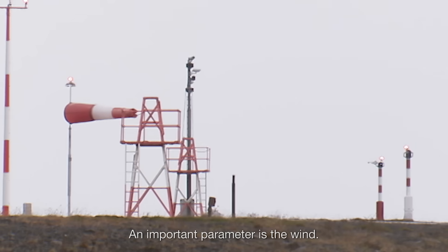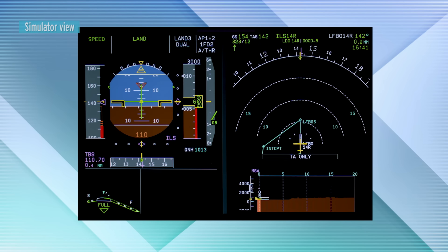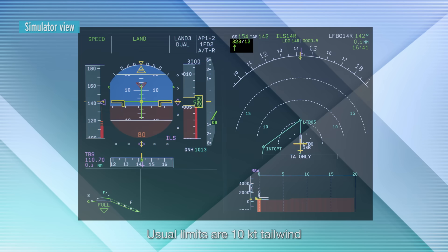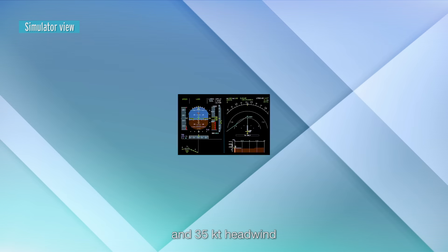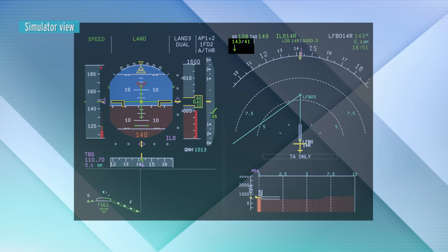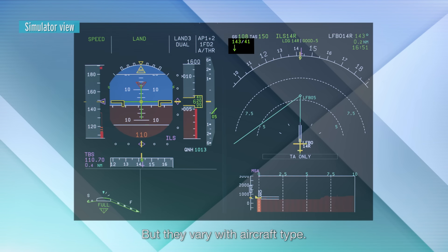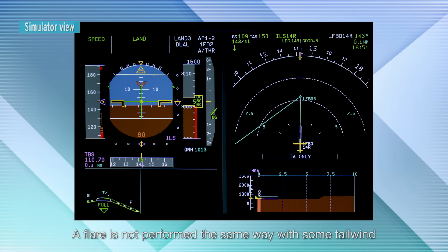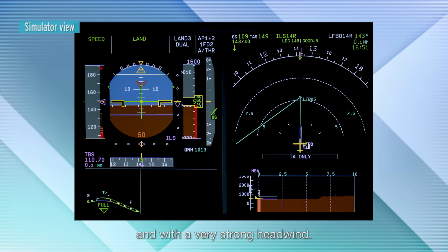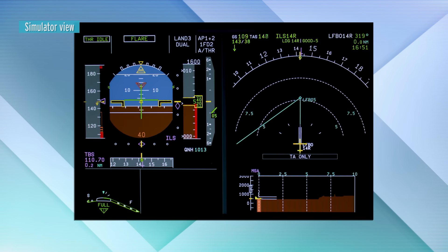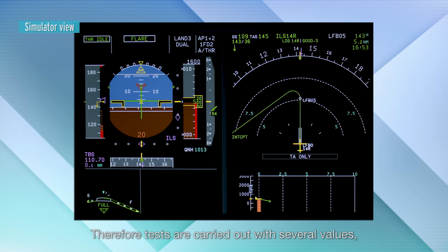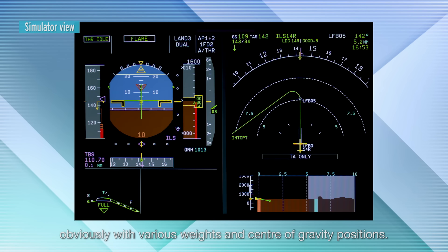An important parameter is the wind. Usual limits are 10 knots tailwind and 35 knots headwind, measured at the tower, but they vary with aircraft type. A flare is not performed the same way with some tailwind and with a very strong headwind. Therefore tests are carried out with several values, obviously with various weights and centre of gravity positions.